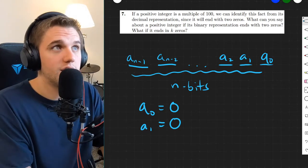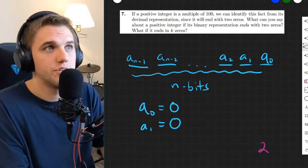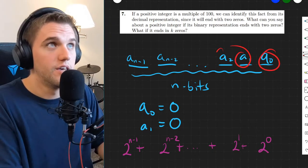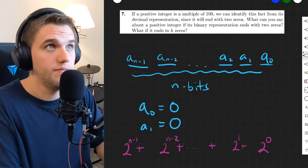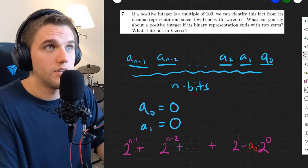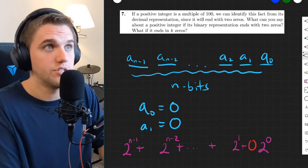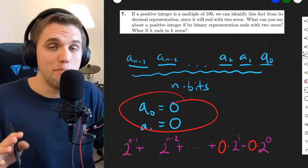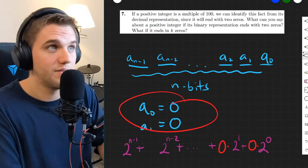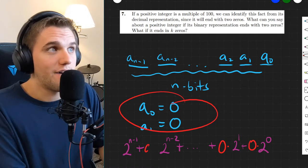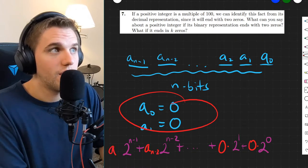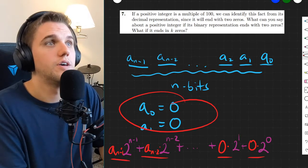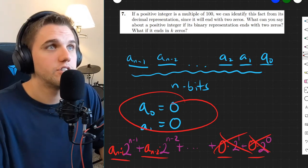So what does that mean when we represent this binary representation in terms of base 10? Well, to convert this to base 10, we would need different powers of 2. Now, the coefficients to all of these terms are precisely these terms here, these placeholders. So this would be a₀ times 2 to the power of 0, which is just 0 times 2⁰. This coefficient would also be 0 because the furthest right two coefficients are both 0. That's by assumption. And then over here, we have aₙ₋₂, aₙ₋₁. These are multiplications. So I have a total of n terms, but these are just 0.